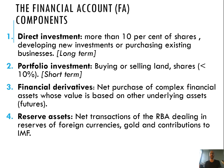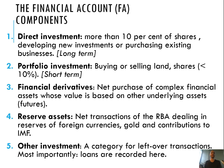The other transactions recorded here are reserve assets — anything that the RBA does in terms of buying and selling foreign exchange, gold, and making contributions to the International Monetary Fund. Other investment is our final category on the financial account. The most important thing recorded here are loans — so if money flows in for loans or Australia lends money for loans, it is recorded on the financial account.